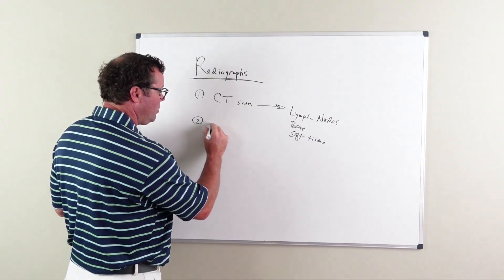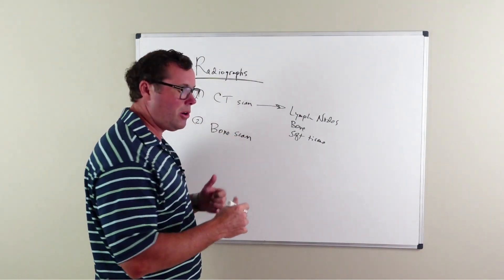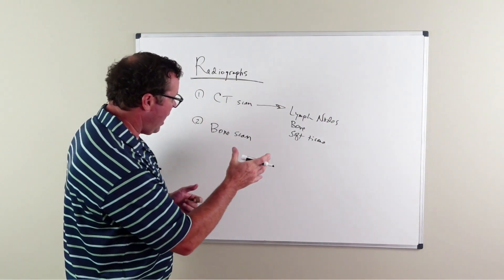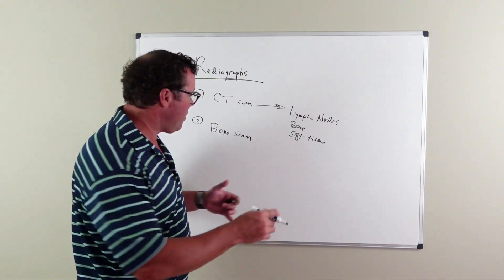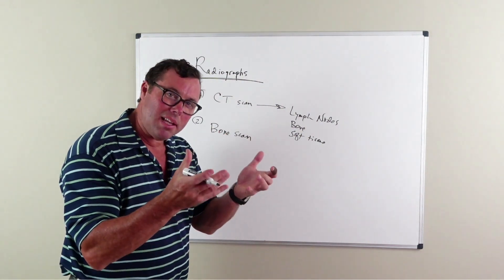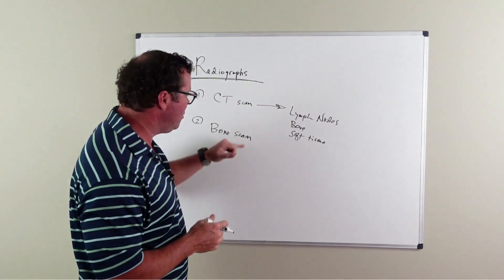The next x-ray is what's called a bone scan. A bone scan is where you're given a nuclear tracer in the vein, and the bones are imaged to see if the bones are actually uptaking this nuclear tracer.